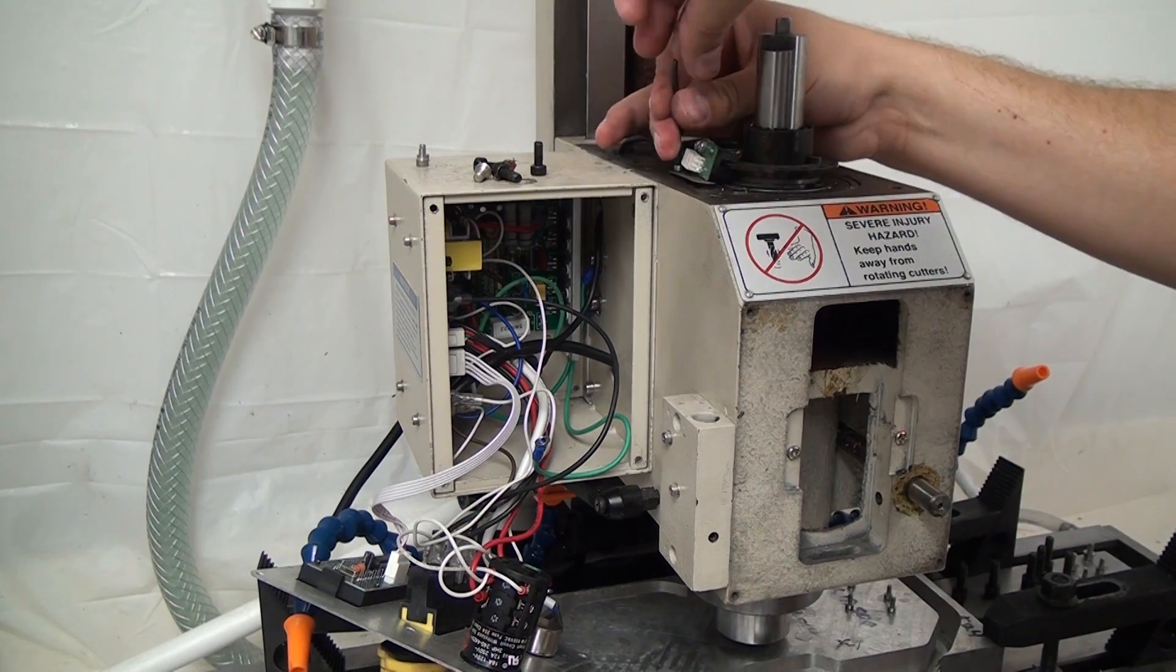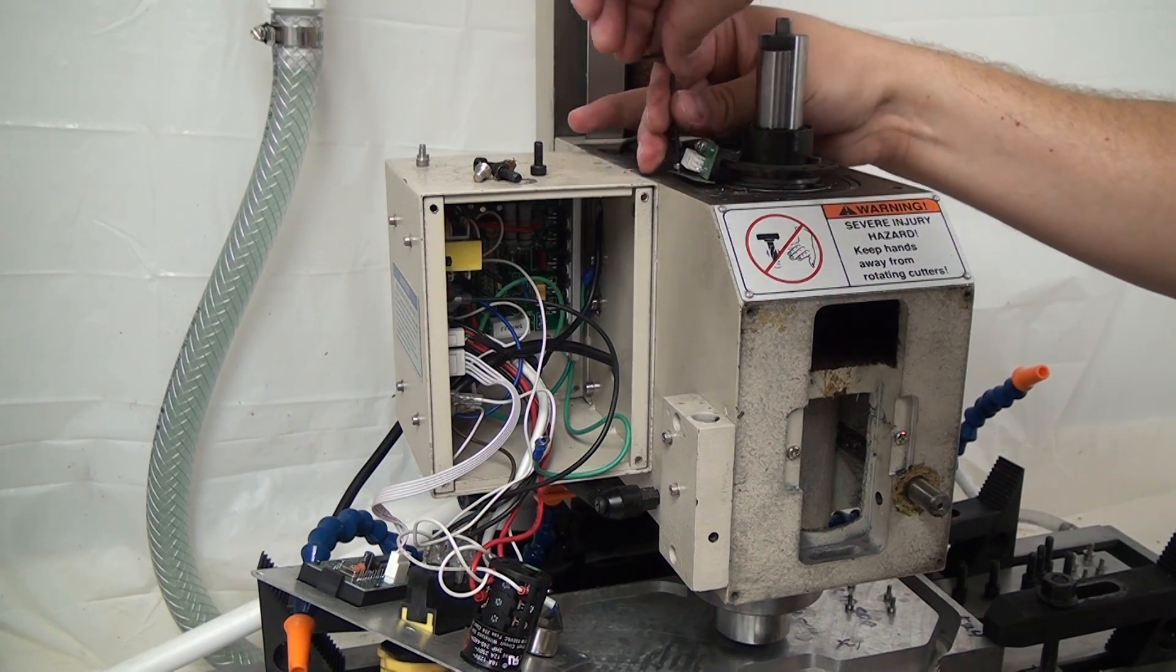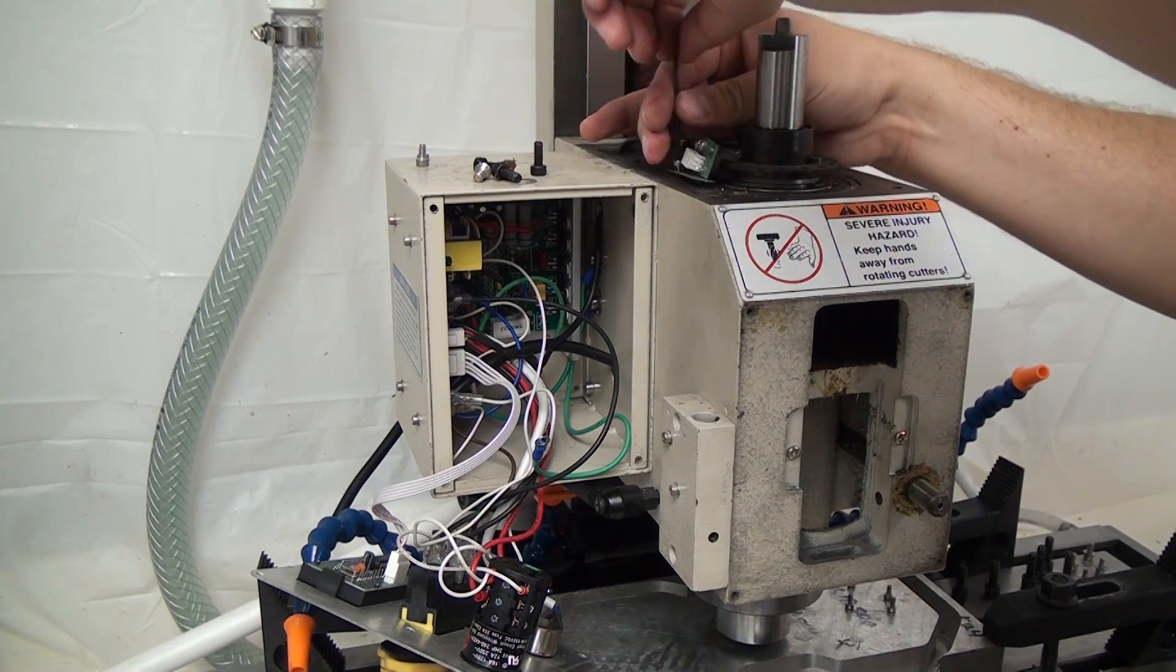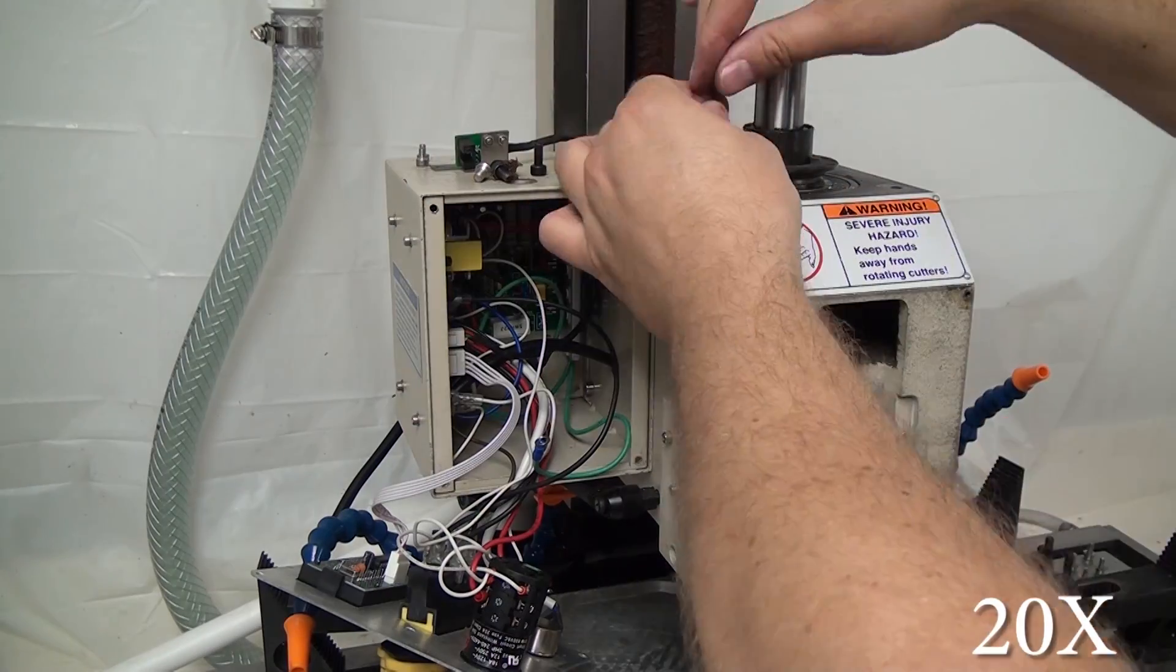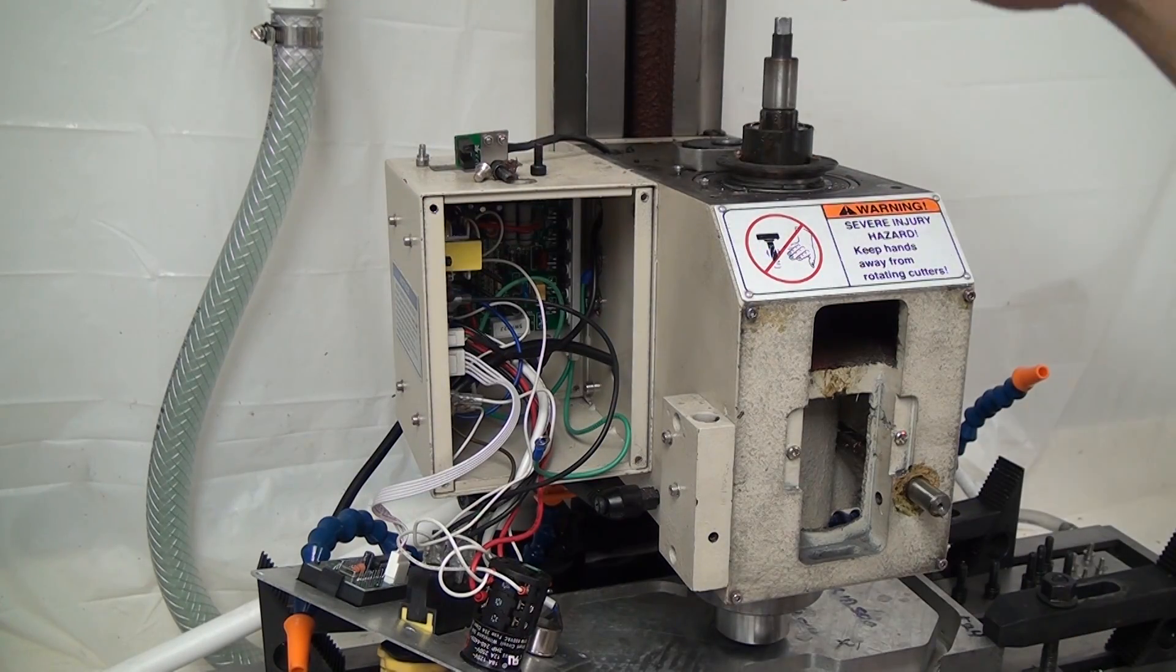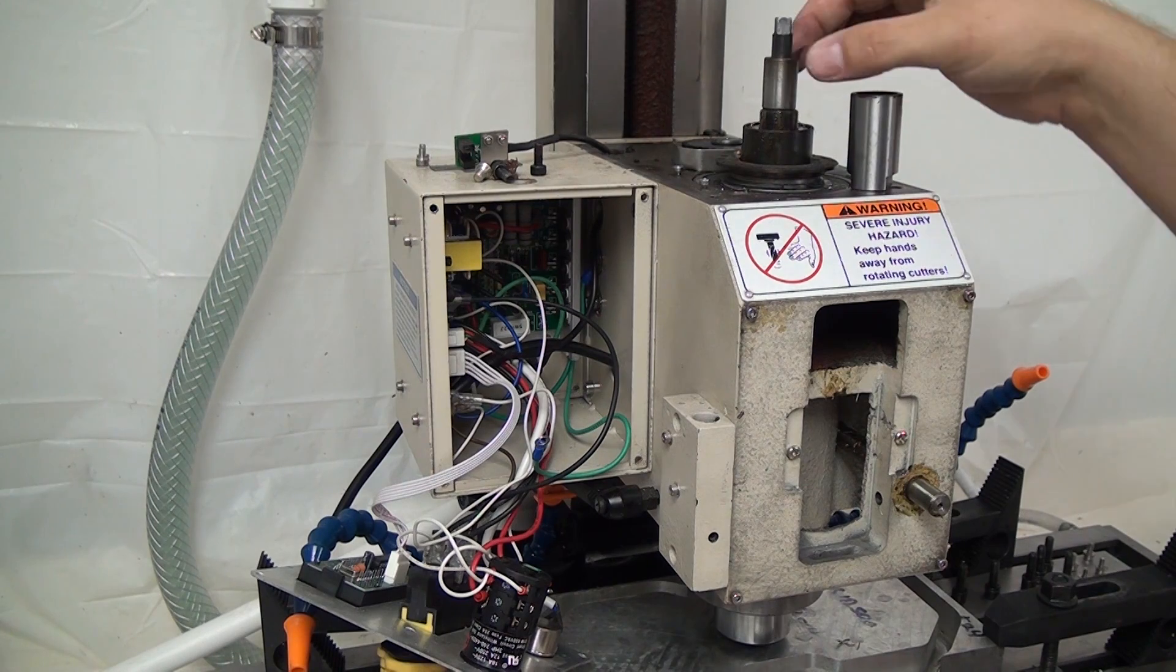The next thing I do is remove the RPM sensor. You actually can't pull that out unless you unwire it, so I just lifted it up and set it there over on the left.